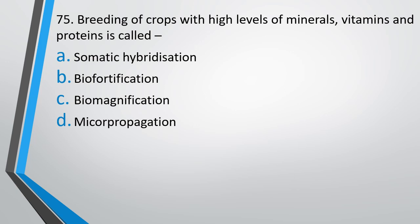Question 75. Breeding of crops with high levels of minerals, vitamins and proteins is called: somatic hybridization, biofortification, biomagnification, or micropropagation? The correct answer is option B — biofortification.